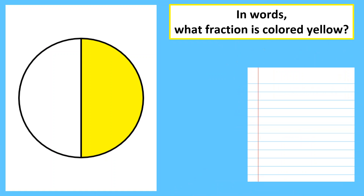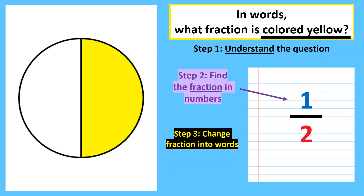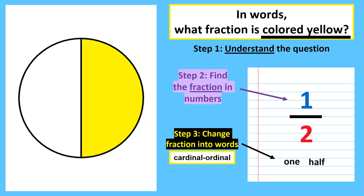Let's have a look at this example. In words, what fraction of this circle is colored yellow? Understand the question — we want the colored yellow. Step two: write the fraction in numbers. Step three: change the fraction into words. The numerator is one — cardinal is one, so write one. The denominator is two — however, if it's two, we don't say second, we say half, because it has a special name. So it is one-half. Don't forget to write the dash in between.